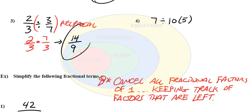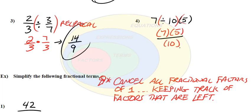I just want to get rid of any fractional factors of 1. When you see an expression, whatever you're dividing by is a separate factor. This expression has a factor of 7 and a factor of 5, but because of the division, in the denominator we have a factor of 10. We can cancel the 5 and the 10, leaving a factor of 2 in the denominator, so we end up with 7 on top over 2.